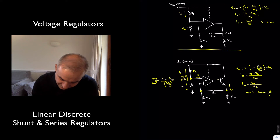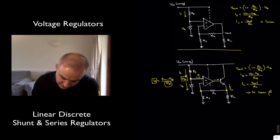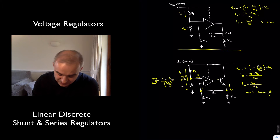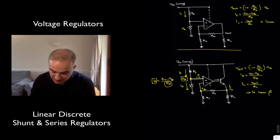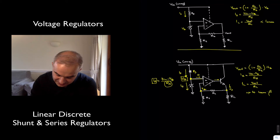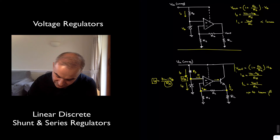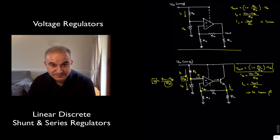We have the zener at the non-inverting input giving the zener voltage Vz. Since we have negative feedback, the voltage at the inverting input is going to be very close to the non-inverting input, so we also have Vz there. With this analysis, you find that the output voltage is the output of the non-inverting amplifier.